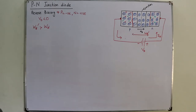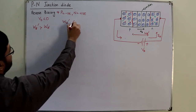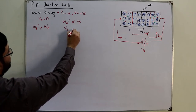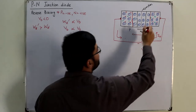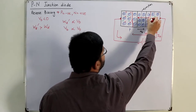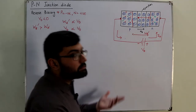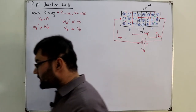So in this case your WD' is directly proportional to the applied voltage. Similarly, the barrier potential has also increased because the electric field is now spread over a greater region. And that is it about the reverse biased condition of a diode.